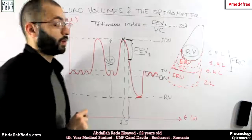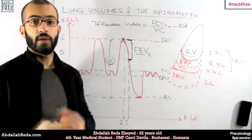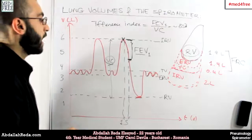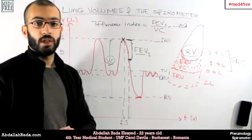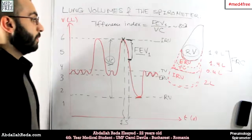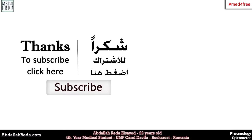This is what we're going to talk about next time — how obstructive and restrictive conditions affect lung volume, and how we can determine from the spirogram whether the patient's condition is obstructive or restrictive. Until then, thank you for watching. Click here to subscribe to be notified when new medical video tutorials are uploaded.